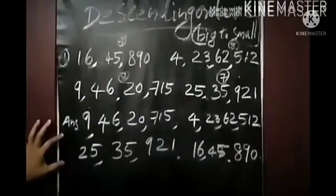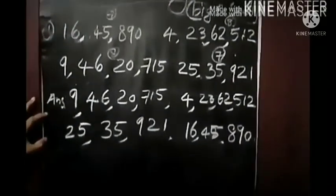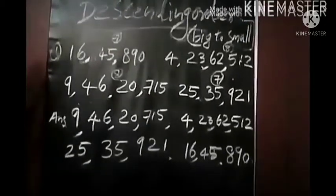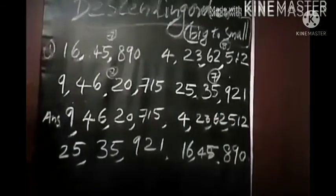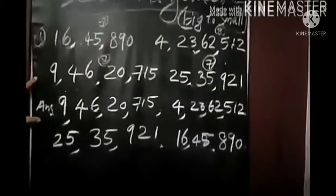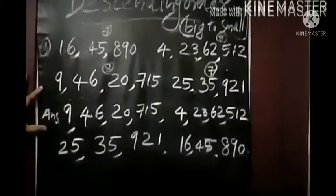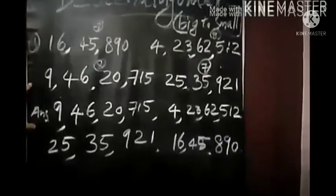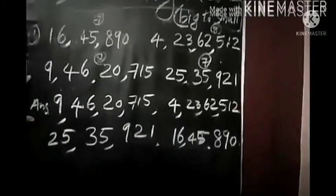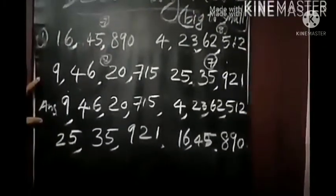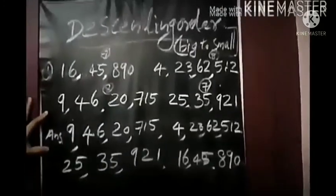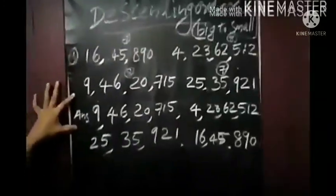To summarize: when arranging in ascending order, listen to the digits and arrange small to big. When arranging in descending order, listen to the digits and arrange big to small — write the big number first.